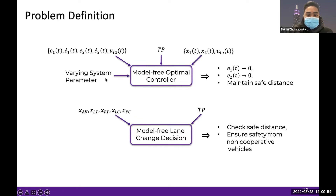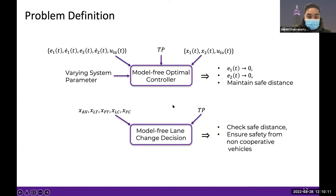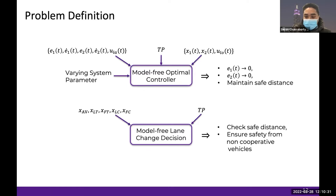Another aspect of our model-free controller is that it can handle any varying system parameters. We also solve a model-free lane change decision making problem using online data, where X_AV, X_LT, X_FT, X_LC, and X_FC are the longitudinal positions of the AV and surrounding vehicles, and TP is the target point. Once we have this data, we want to ensure that the lane changing is safe from non-cooperative vehicles, and the decision making module is responsible for maintaining safe distances.